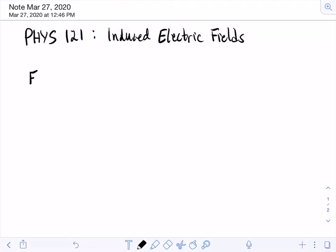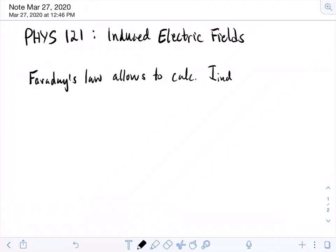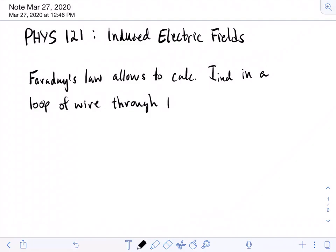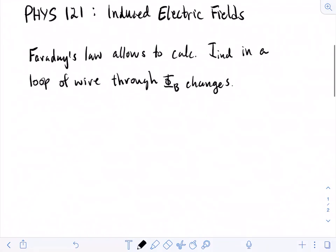So let's just review what we know from the recent videos. What we've been talking about is Faraday's Law. What Faraday's Law does is it allows us to calculate an induced current in a loop of wire through which the magnetic flux changes. We can change flux in many ways: we can have the strength of a magnetic field changing, the area of the loop changing, or the orientation of that loop relative to the magnetic field changing.